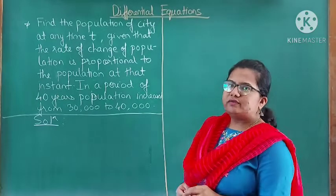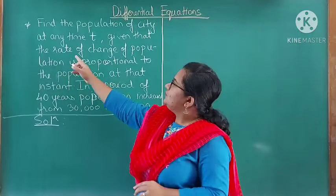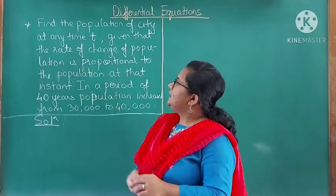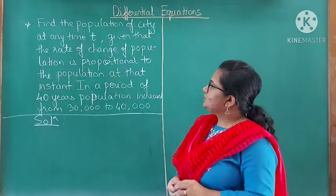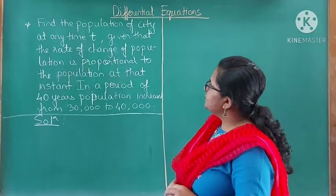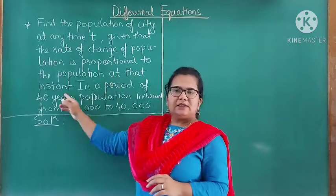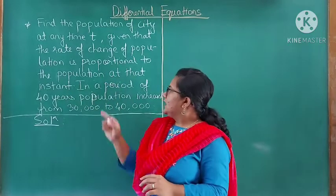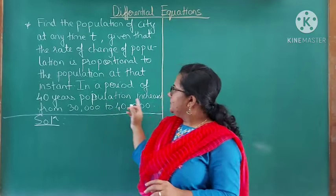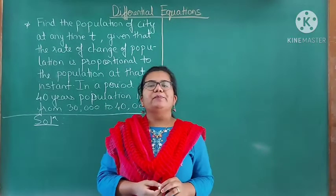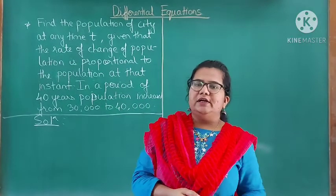The population growth — we will see one example. Find the population of the city at any time t, given that the rate of change of population is proportional to the population at that instant. An additional condition is that in 40 years the population increased from 30,000 to 40,000.